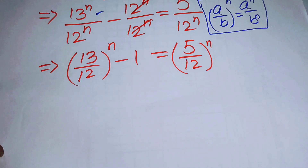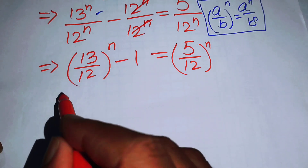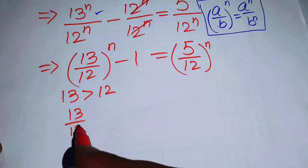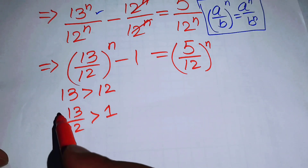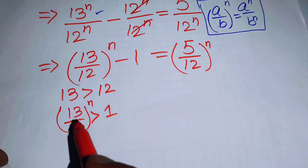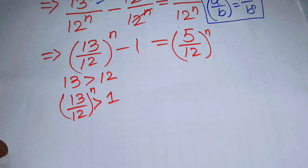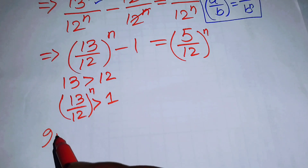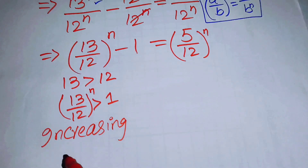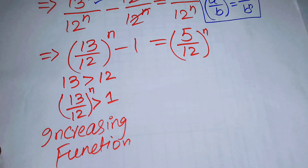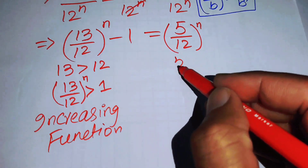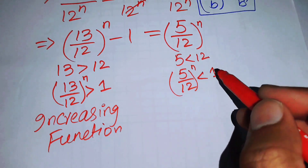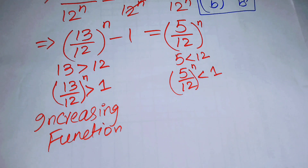Now focus on both terms. Since 13 is greater than 12, we have 13/12 greater than 1, and raising it to any power n gives (13/12)ⁿ greater than 1 — so the left-hand side is an increasing function. On the right-hand side, 5 is less than 12, so 5/12 is less than 1, and (5/12)ⁿ is also less than 1 for any n.